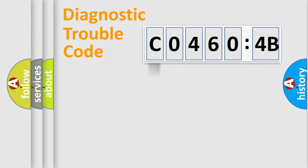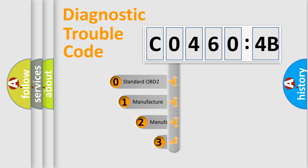Powertrain, Body, Chassis, Network. This distribution is defined in the first character code.